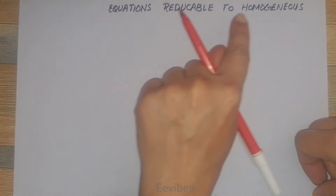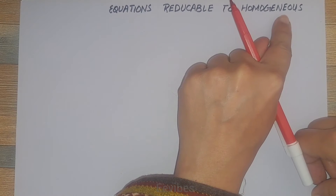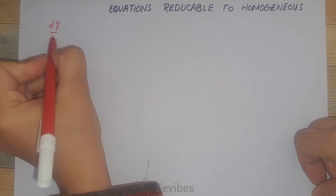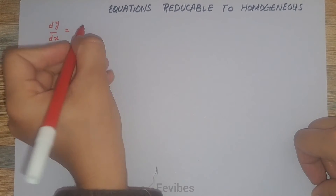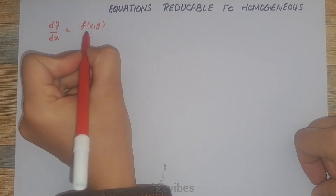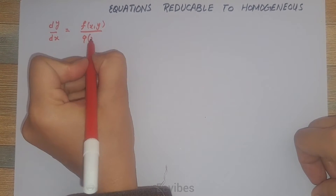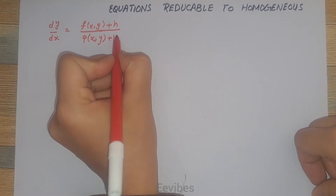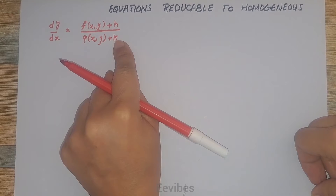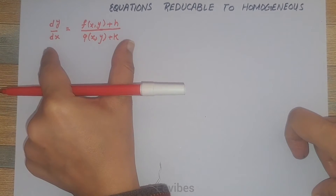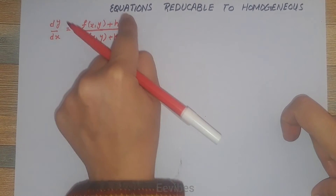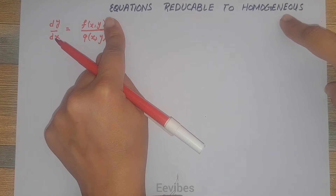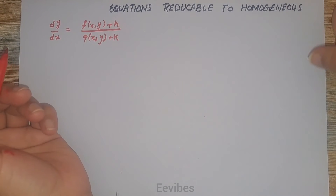In the previous lecture I described how we can solve homogeneous differential equations, but sometimes there can be a case where the derivative dy/dx is given in the form of f(x,y) over φ(x,y) and there might be some constants present in the numerator and denominator. In such cases we need to eliminate these constants so the equations can be converted into homogeneous form, and then we can apply the variable separable method.